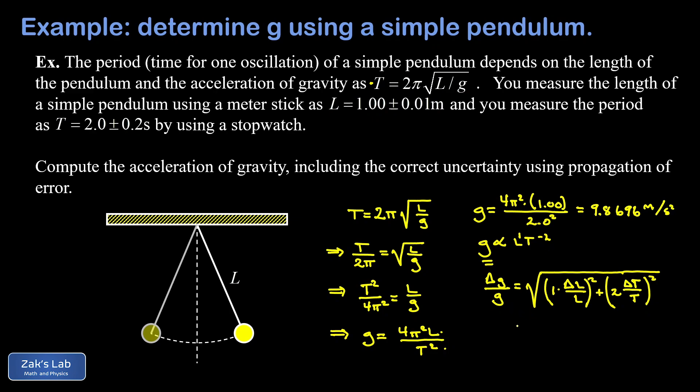Now we can just sub in all the values here. Delta L, or the uncertainty in the length, was 0.01 meters, and the length itself was 1.00. And delta t was 0.2, and t itself was 2.0. We'll go ahead and smash the numbers in that square root, and we get about 0.200.